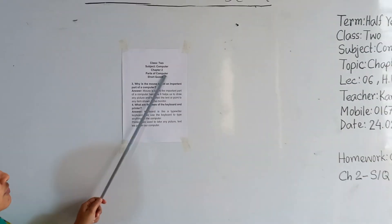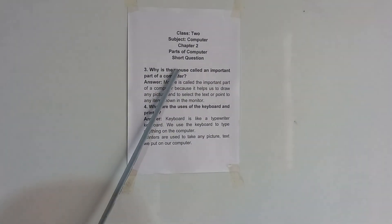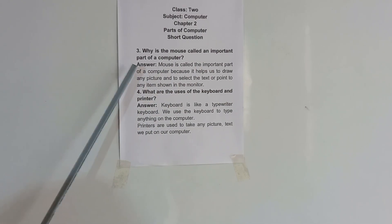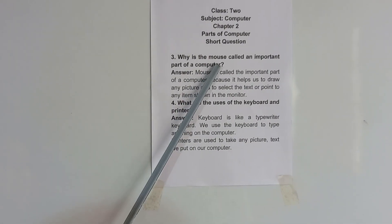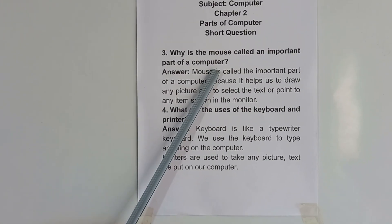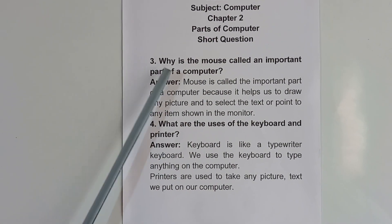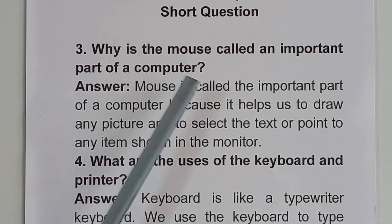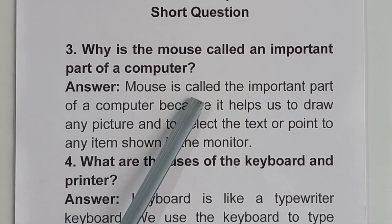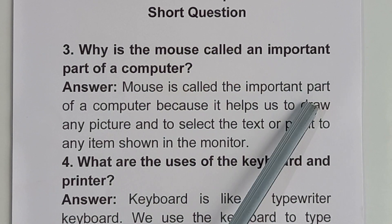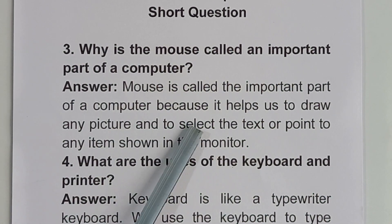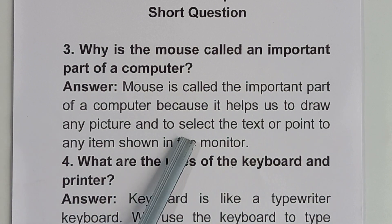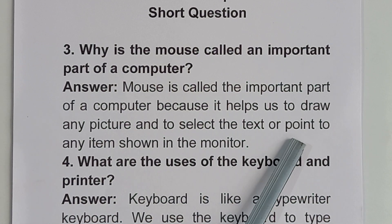Chapter 2: Parts of Computer. Today's topic is short questions. Number 3: Why is the mouse called an important part of a computer? The answer is: the mouse is called an important part of a computer because it helps us to draw any picture and to select the text or point to any item shown in the monitor.